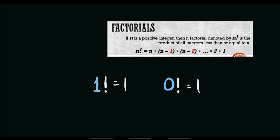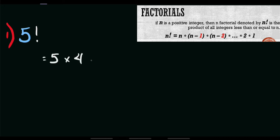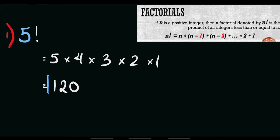Let's try to answer this set of examples. For example number 1, if we have 5 factorial, that is equal to 5 times 4 times 3 times 2 times 1. So with this calculator, 5 times 4 times 3 times 2 times 1 equals 120. So 5 factorial equals 120.